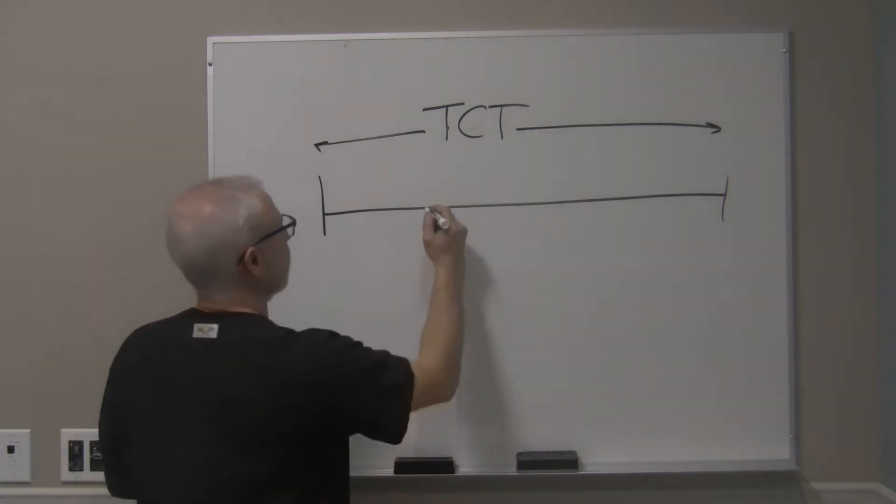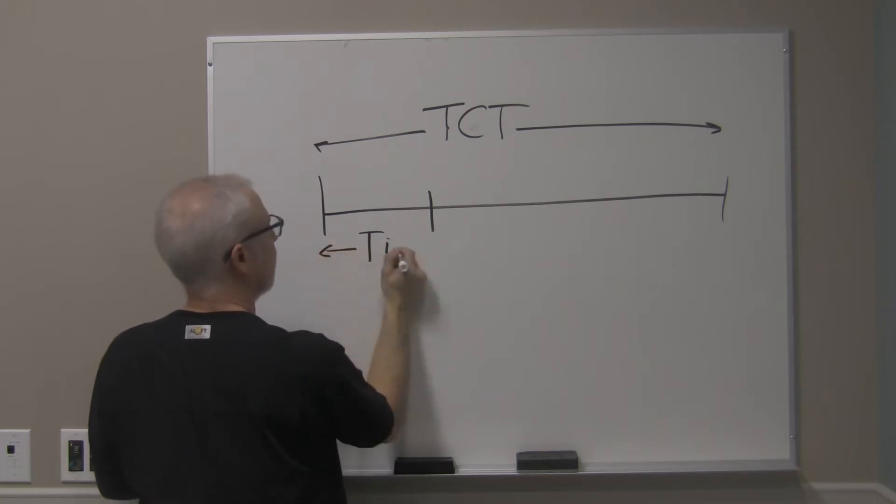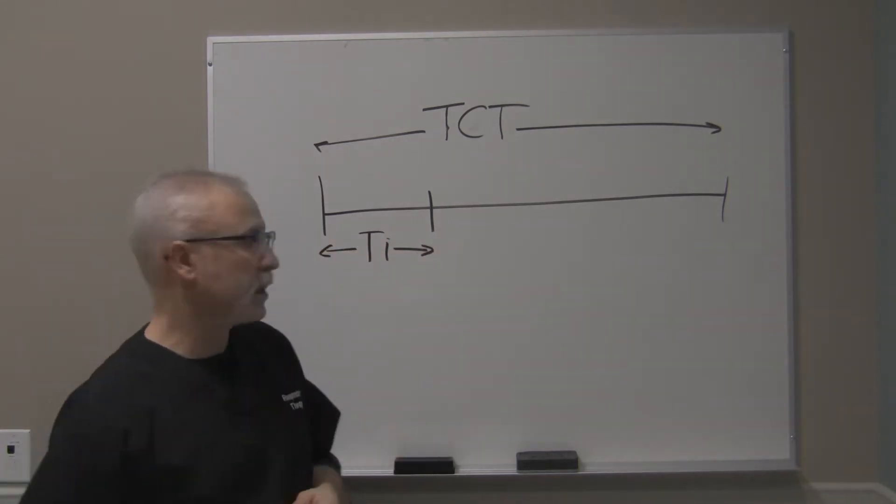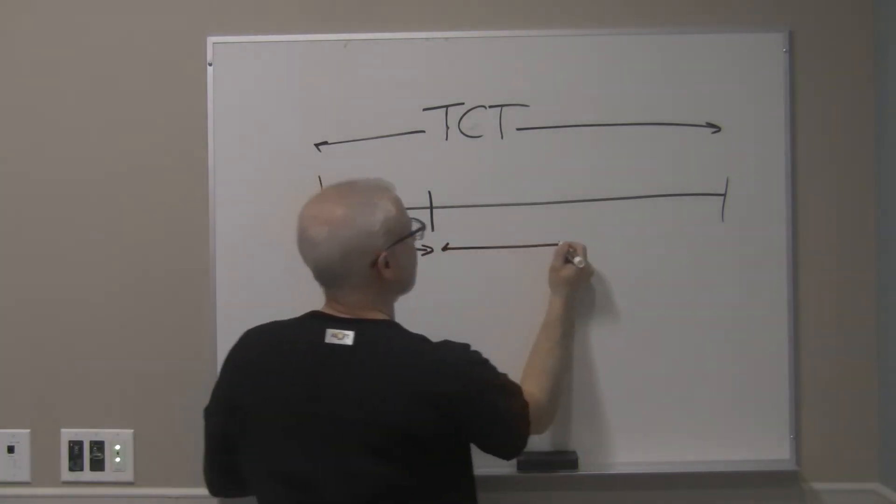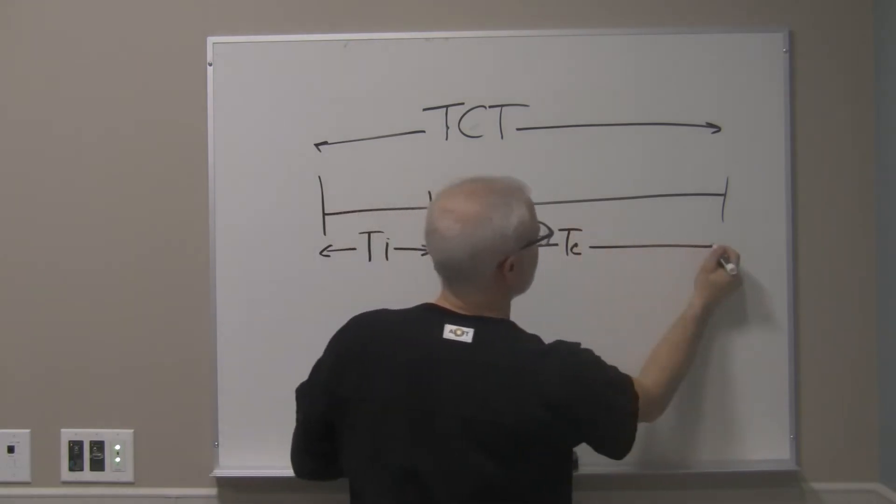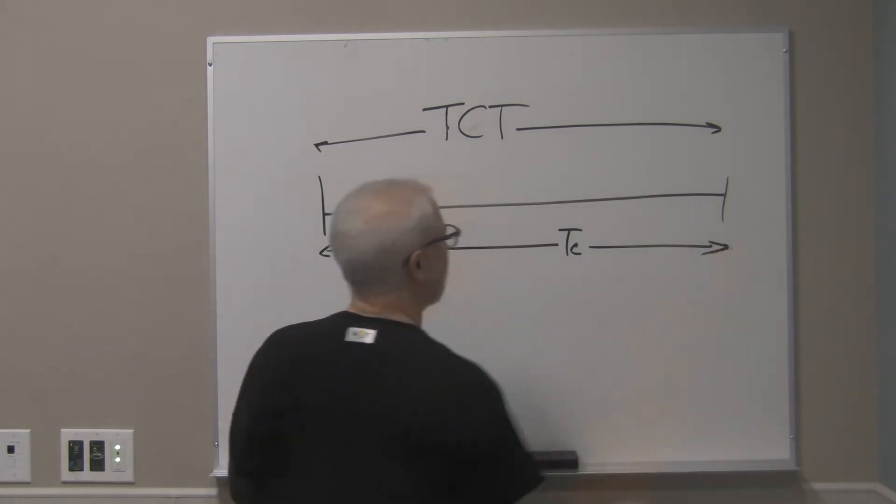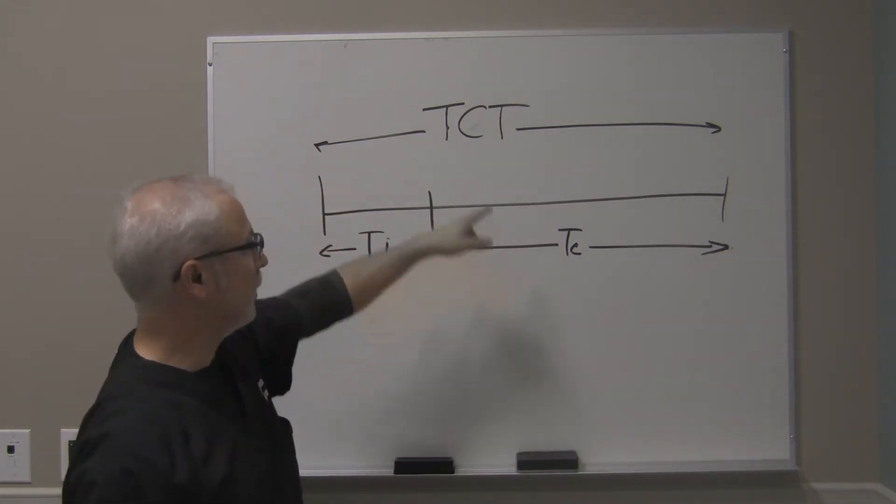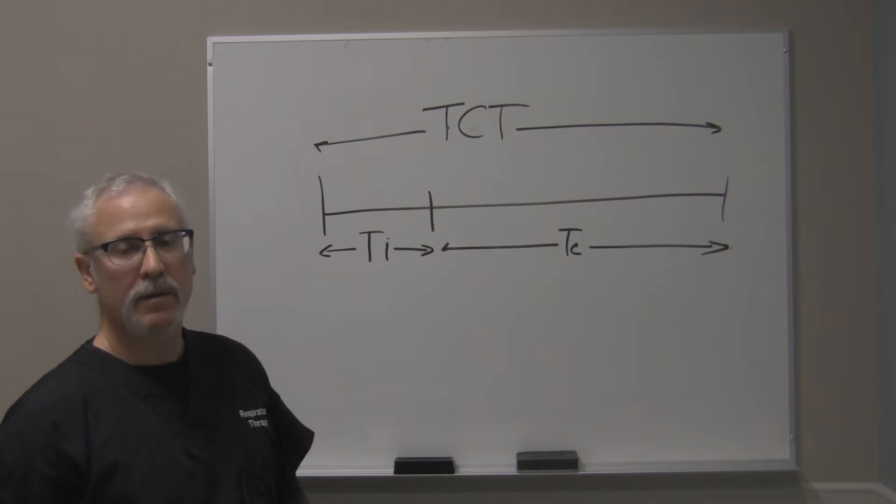there has to be a period for inspiration, and there has to be a period for exhalation. So if we arbitrarily make a mark like this, we could say this is the TI that the patient took, and this is the TE, or the time for exhalation, that the patient took. So the TI and the TE are all encompassed, or occur within the total cycle time.